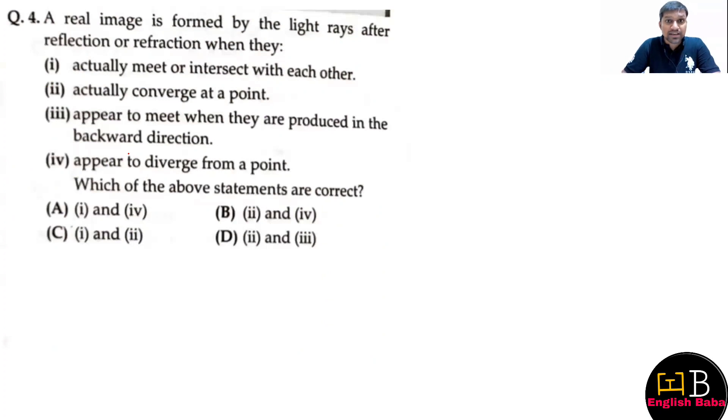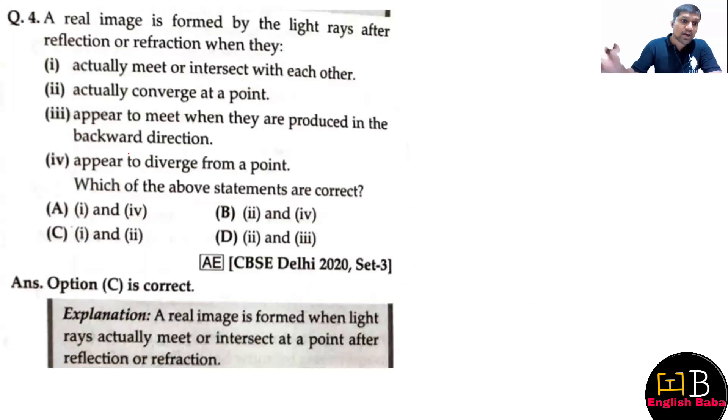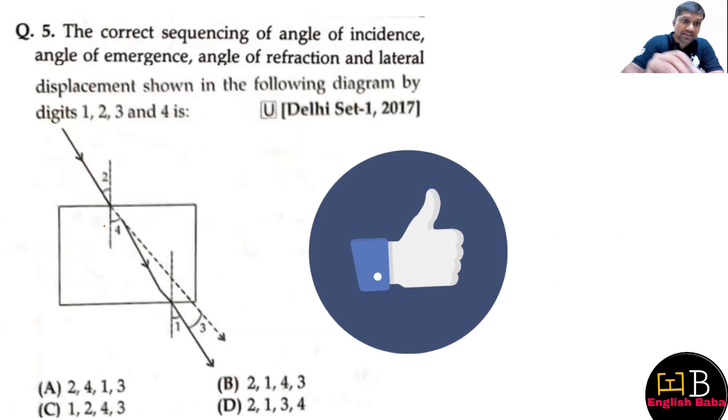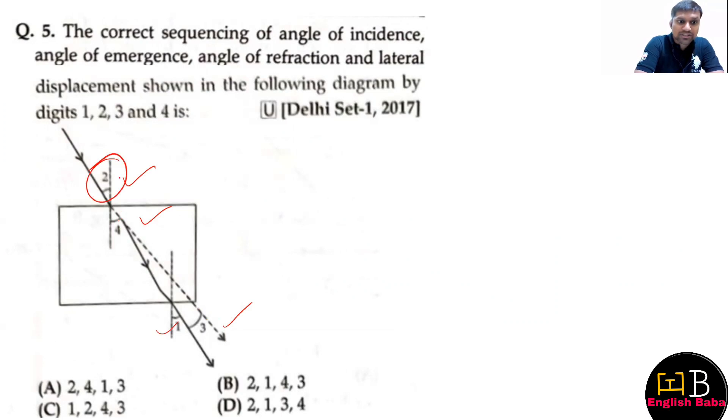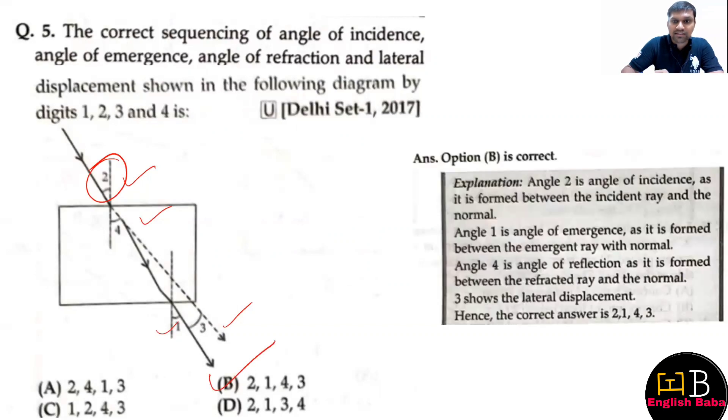Moving on to the next question guys. The correct sequence - the answer is only first and second properties, that is intersected to the next which is the point which is converging on point. So the option is correct. Next, fifth question about the correct sequence of emergence - 2143 is the correct answer, so option B is the correct option here.